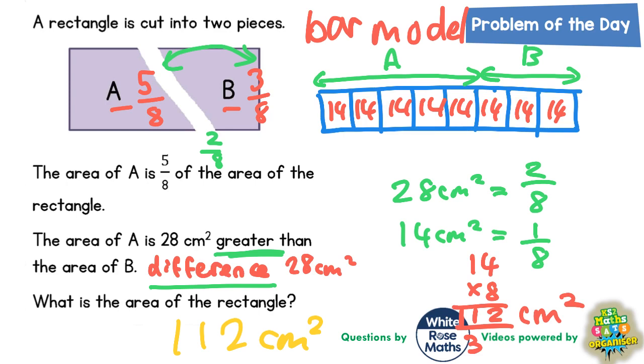So B would be three lots of 14. So three lots of 14 for B is 14 times 3. Three fours are 12, put the two in, carry the one. Three ones are three, plus the one is four. So B would be 42 centimeters squared.